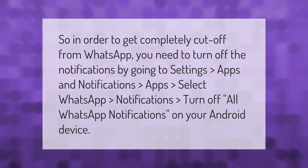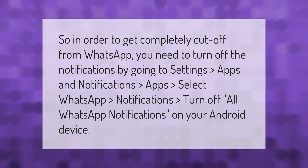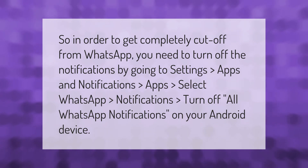In order to get completely cut off from WhatsApp, you need to turn off the notifications by going to Settings, Apps and Notifications, then Apps. Select WhatsApp, then Notifications, and turn off all WhatsApp notifications on your Android device.